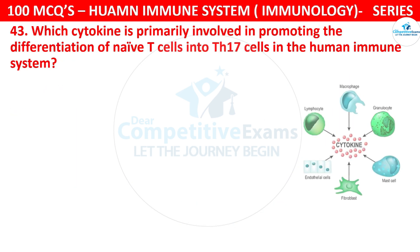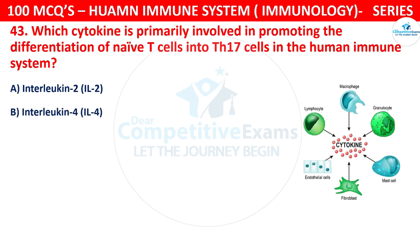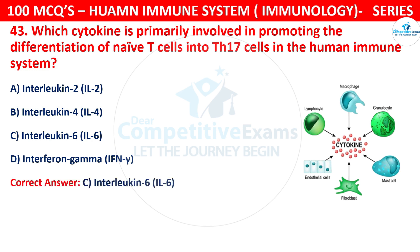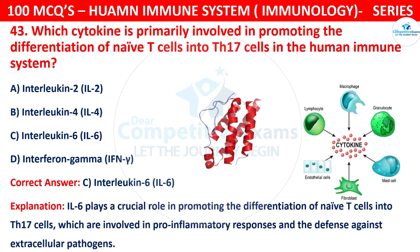Question number 43. Which cytokine is primarily involved in promoting the differentiation of naive T cells into TH17 cells in the human immune system? The options are interleukin-2 (IL-2), interleukin-4 (IL-4), interleukin-6 (IL-6), or interferon-gamma. The correct answer is C, that is IL-6. IL-6 plays a crucial role in promoting the differentiation of naive T cells into TH17 cells, which are involved in pro-inflammatory responses and defense against extracellular pathogens.